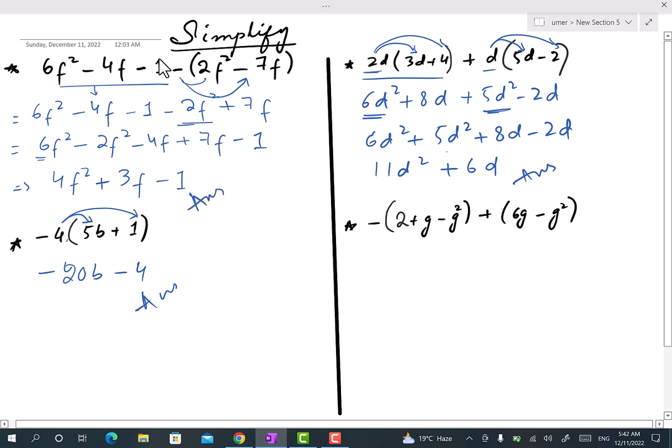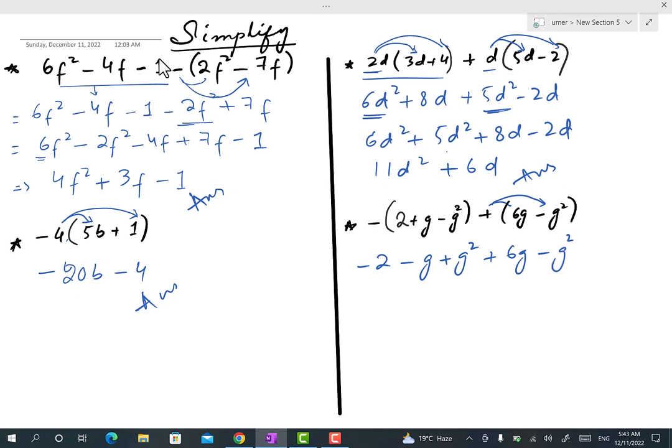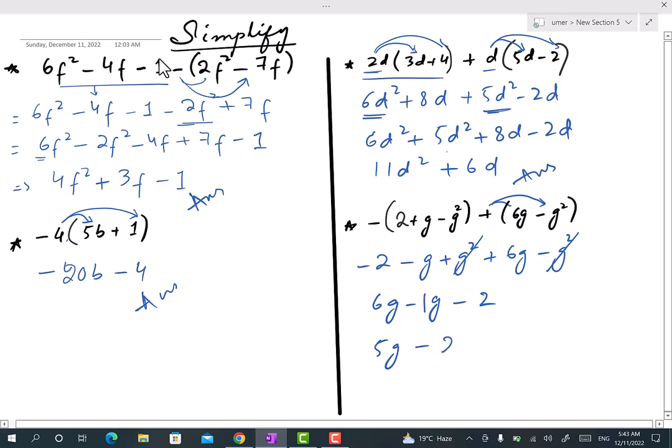And now simplifying the last one. It's a minus sign multiplied with this bracket, so minus will change the signs of the members of this bracket. And then this plus has no impact on the signs of this bracket. So plus g² is cancelled with minus g², and plus 6g and minus g, if we arrange them this way it's simple to analyze. Now we have 6 minus 1 is 5g minus 2. So this is the answer.